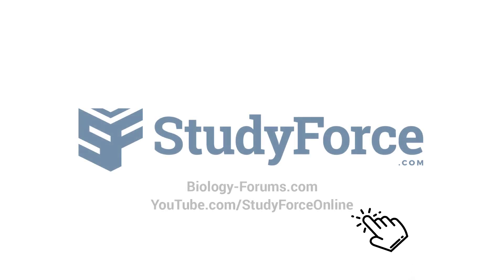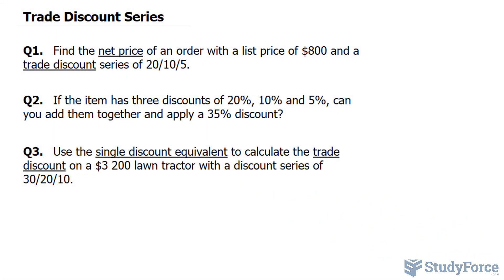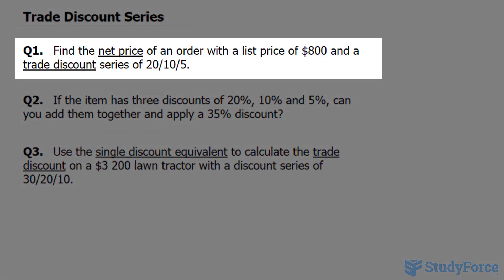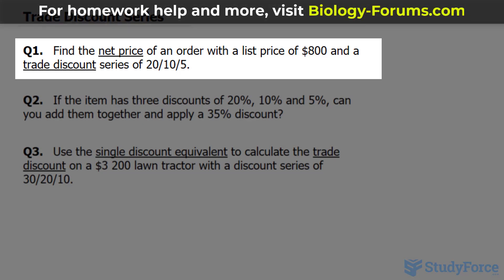In this lesson, we'll go through three examples calculating trade discounts. The first question reads, find the net price of an order with a list price of $800 and a trade discount series of 20, 10, and 5.